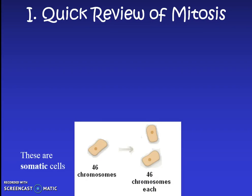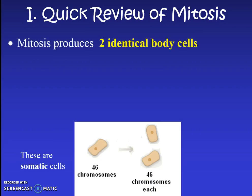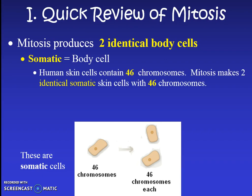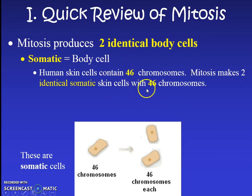When we talk about meiosis we have to be very careful not to get it confused with mitosis, which was just normal cell division for growth and repair. During mitosis we made two identical body cells — they were genetically identical. We're now going to learn a new word for body cell called somatic cell, which is a synonym for body cell. For example, human skin cells contain 46 chromosomes, and mitosis would make two identical somatic skin cells each with the same 46 chromosomes. That is mitosis.